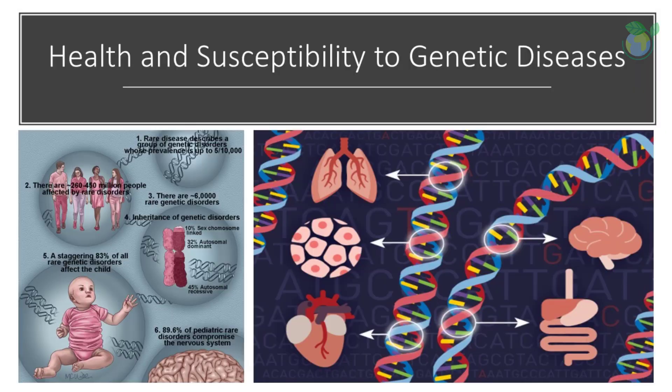Genes play a critical role in determining a person's overall health and susceptibility to disease. Genes are responsible for the production of proteins, which are essential for the proper functioning of the body's cells, tissues, and organs. When a gene is altered or mutated, it can result in the production of abnormal or non-functioning proteins. This can lead to a wide range of health problems, including genetic disorders, chronic illnesses, and even cancer.